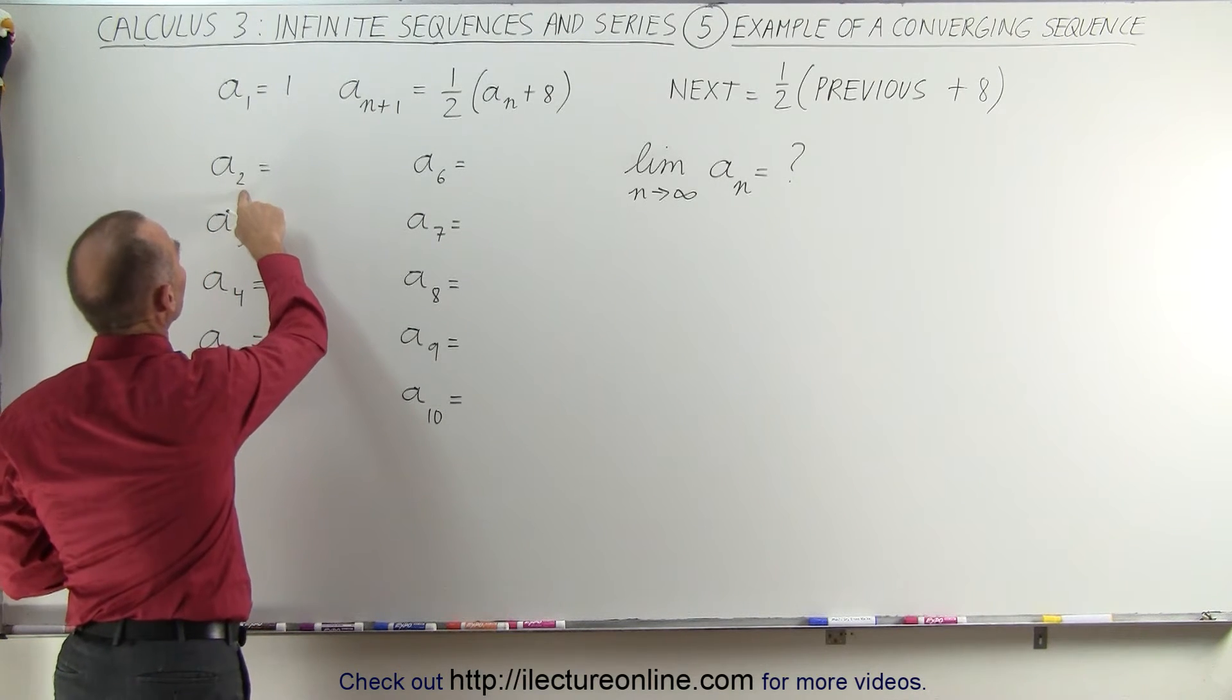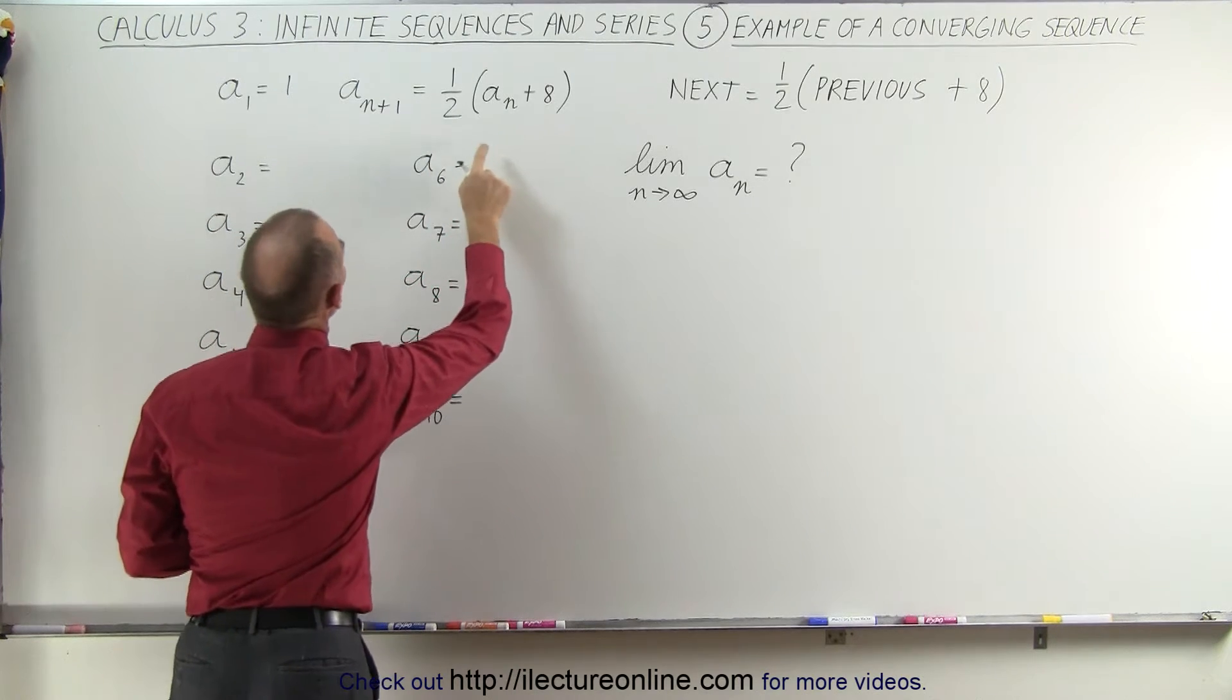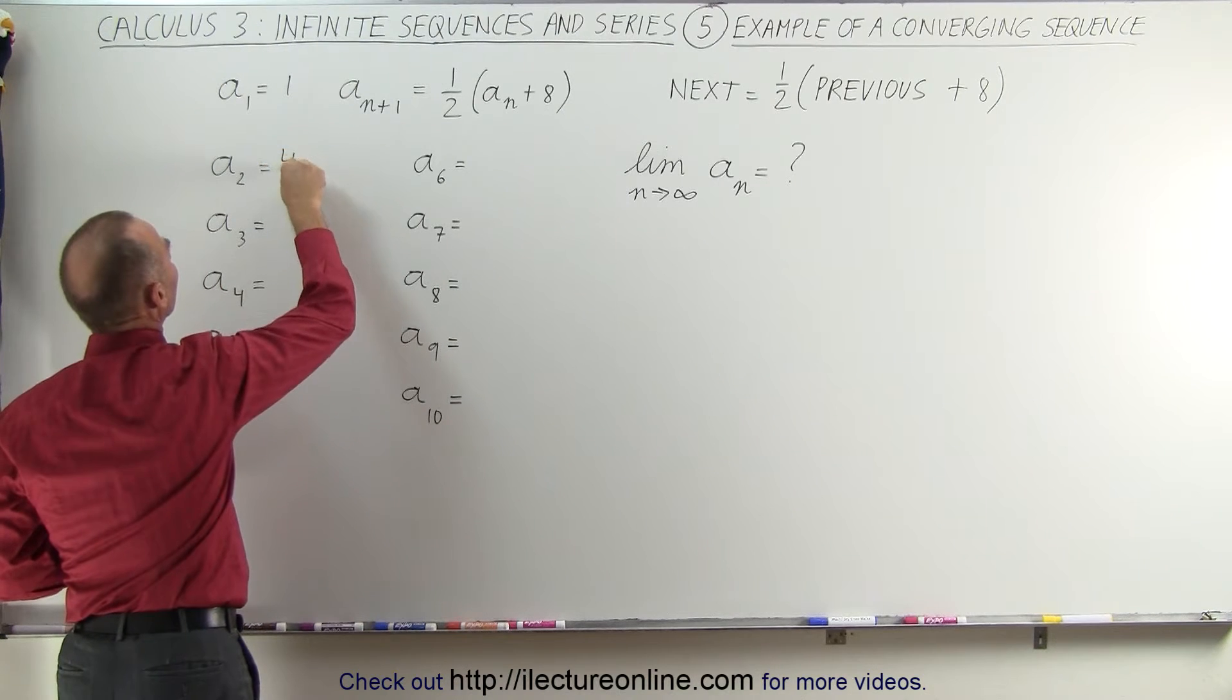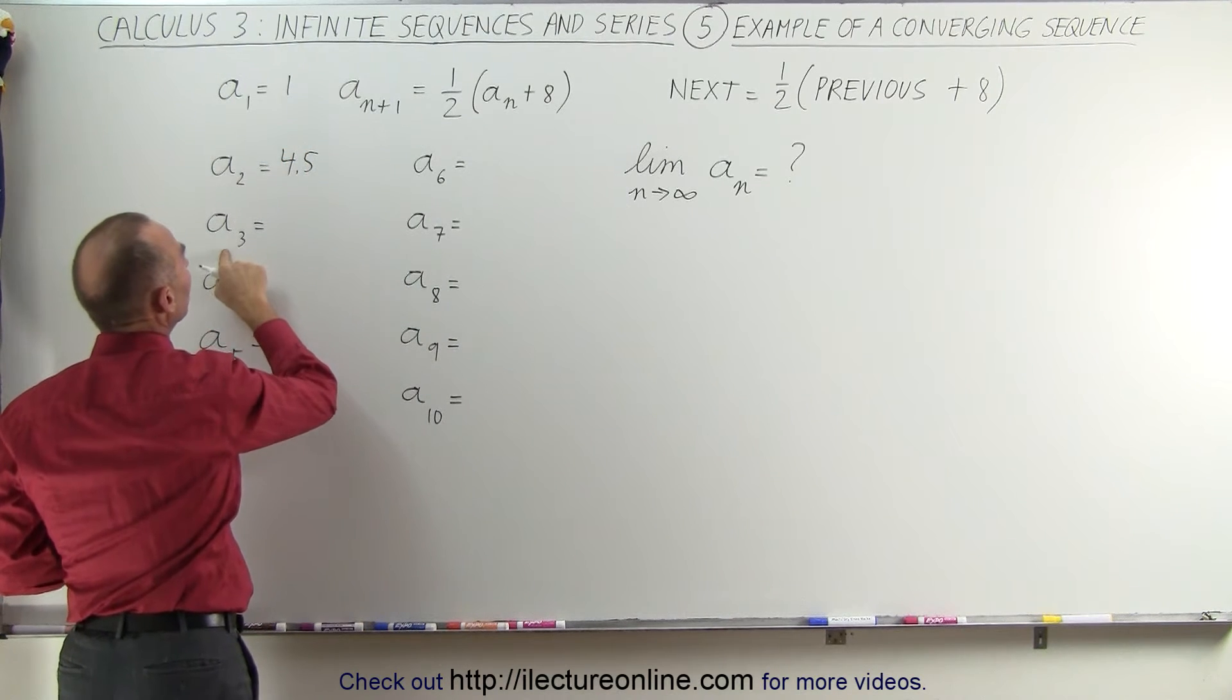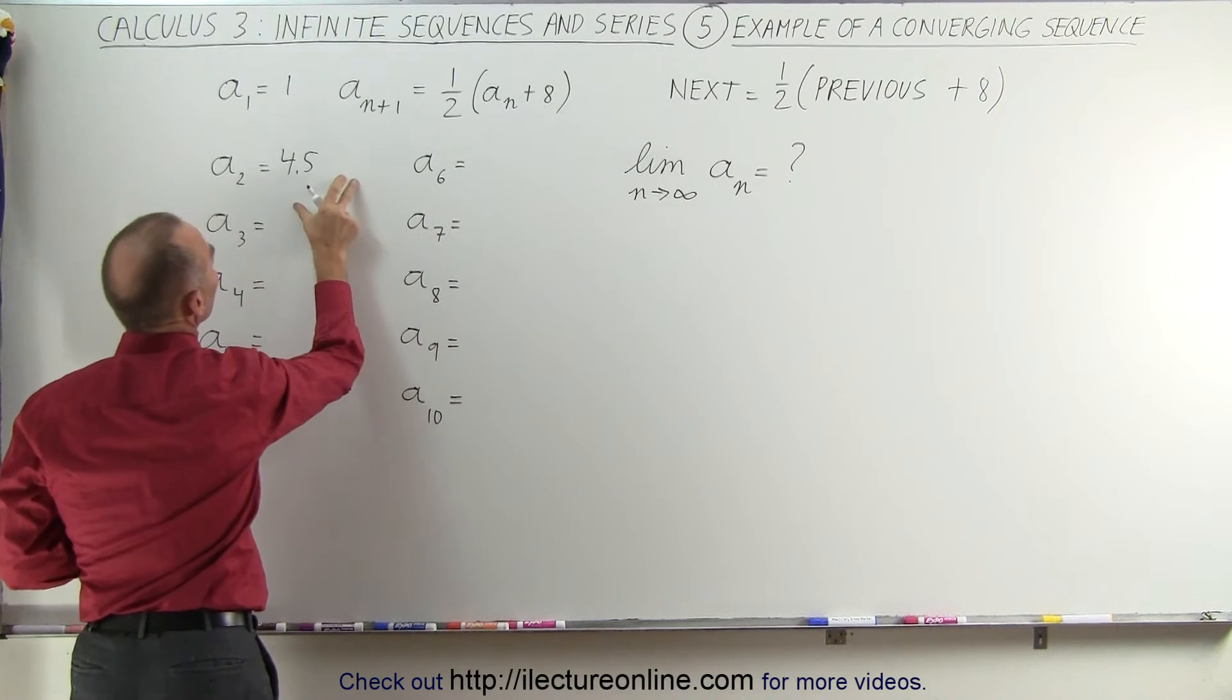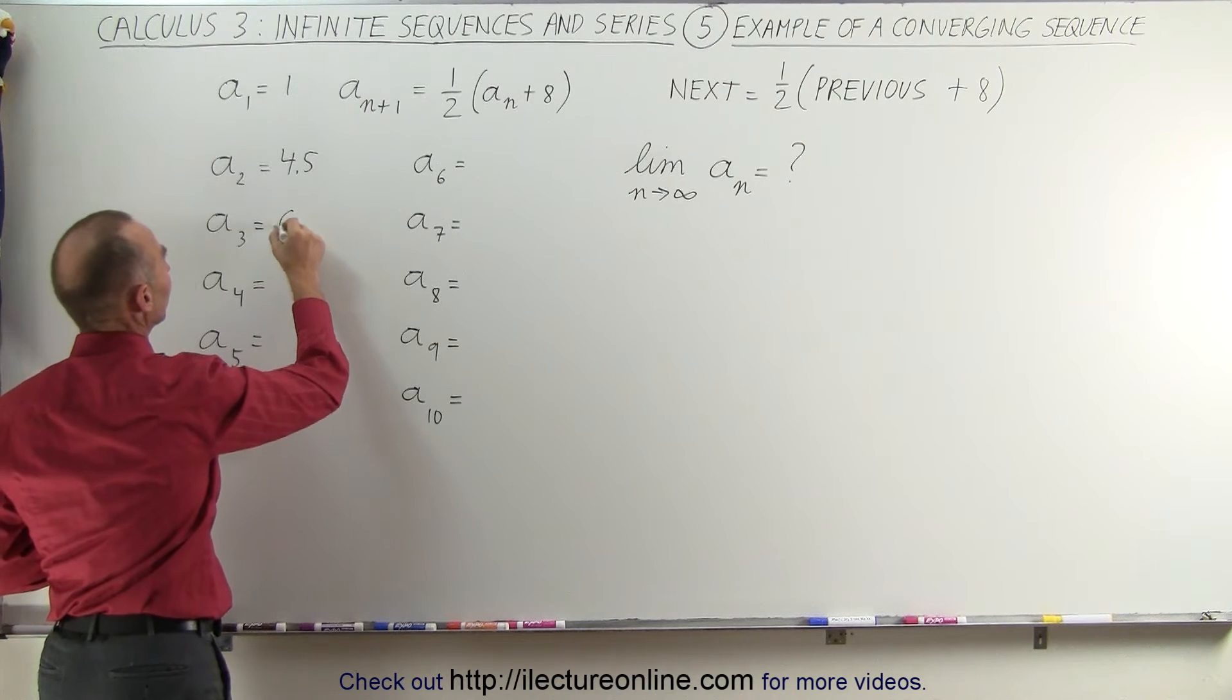A sub 2, that's the next element, is equal to one-half times the previous element plus eight. So it would be one plus eight divided by two which is 4.5. Then the third element would be the previous element plus eight divided by two. So it would be four and a half plus eight is twelve and a half divided by two which is 6.25.